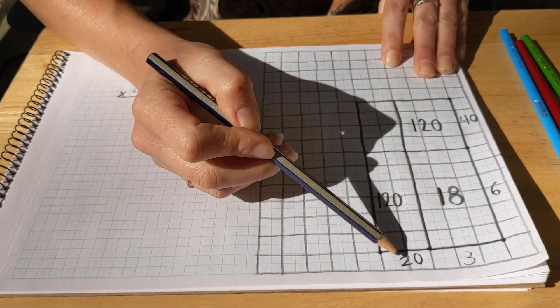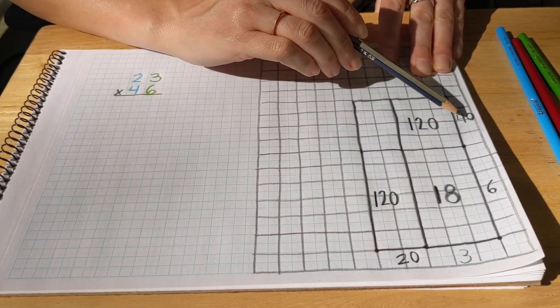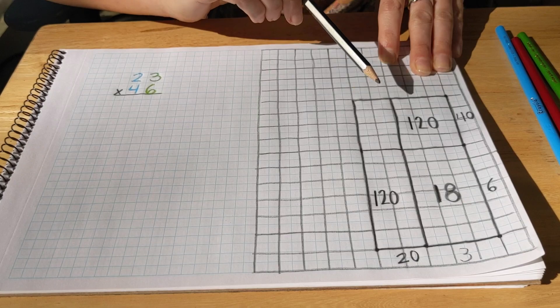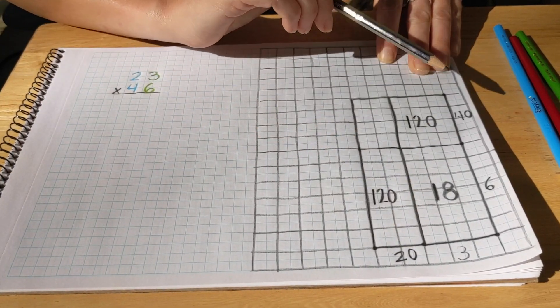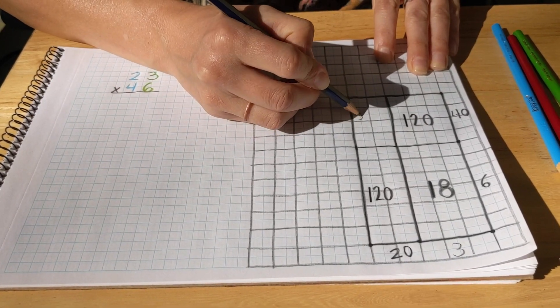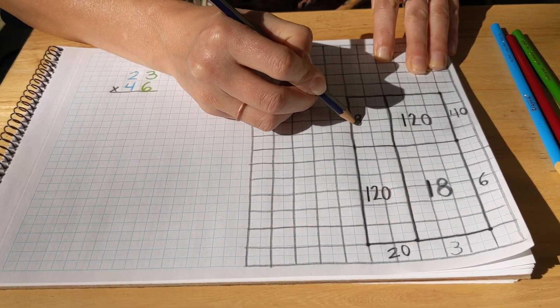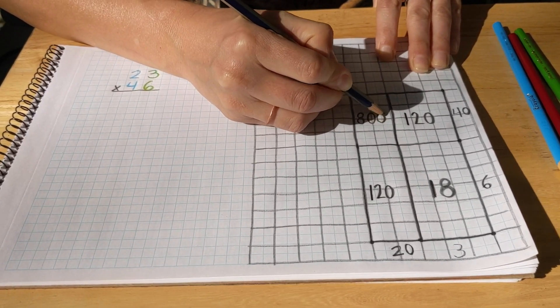And now we're going to multiply tens times tens. Two times four is eight. One, two, three, four, five, six, seven, eight, right? But here we have two zeros. Tens times tens gives you hundreds. So two times four is eight, but we add the two zeros. So in here we have 800.